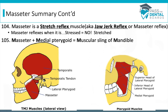Sometimes you'll get questions asking you if the muscle reflexes when it's stressed, and it doesn't — it's going to reflex when it is stretched. The masseter is part of something called the muscular sling of the mandible, which is made up of two muscles: the masseter and the medial pterygoid.